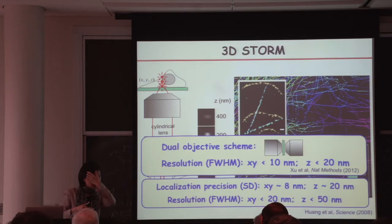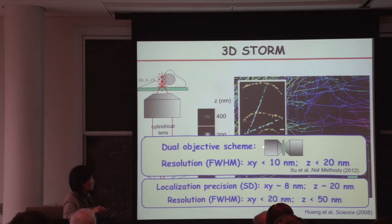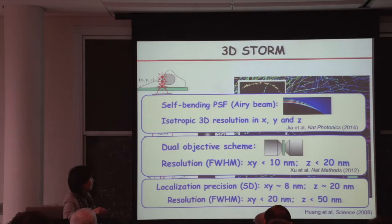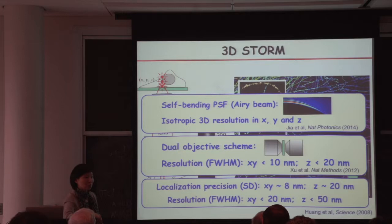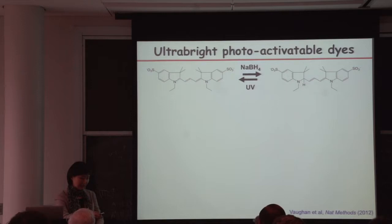Since I want to leave time for the new approach, I'll very quickly mention recent developments in our lab. By inserting the specimen between two objectives, we improved resolution 2-fold to about 10 nanometers in XY and 20 nanometers in Z. A clever postdoc also took advantage of a new optical waveform called the Airy beam, which doesn't diffract but bends, to localize molecules. He solved the problem of anisotropic resolution — Z was twice worse than XY — and achieved isotropic XYZ resolution. Combined with the dual-objective approach, we now have 10 nanometers in all XYZ directions.